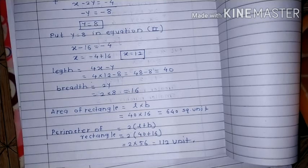Perimeter of rectangle is 2 into bracket l plus b, that is 2 into bracket 40 plus 16, equal to 2 into 56, equal to 112 units.